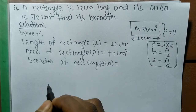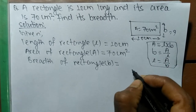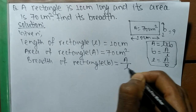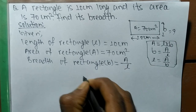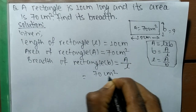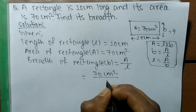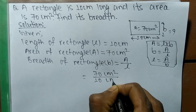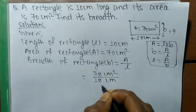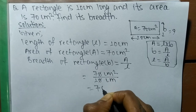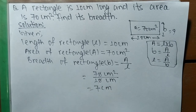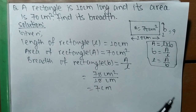Here we have to find the breadth of the rectangle, so breadth equals area divided by length. The area of the rectangle is 70 centimeters square and the length is 10 centimeters. The zeros cancel, giving us 7 centimeters, which is the breadth of the rectangle.